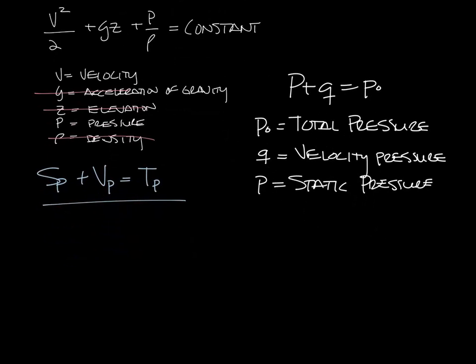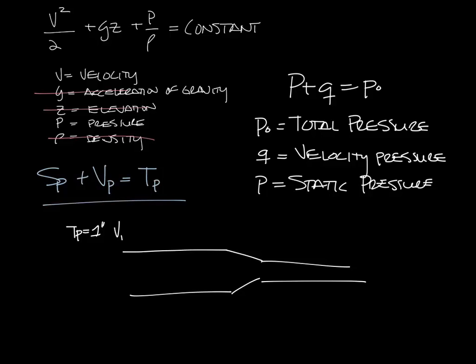So who knew you'd been using Bernoulli's equation all along? If we look at some ductwork and let's say we have one inch total pressure, 0.4 inches of velocity pressure, and 0.6 inches of static pressure at this point in the ductwork — and then we reduce the ductwork down — over here we still have one inch of total pressure, because that hasn't changed. But now our velocity pressure has gone to 0.7 inches, and the static is 0.3.